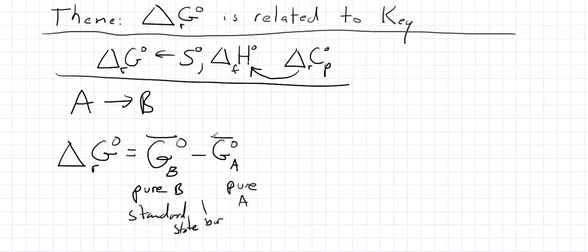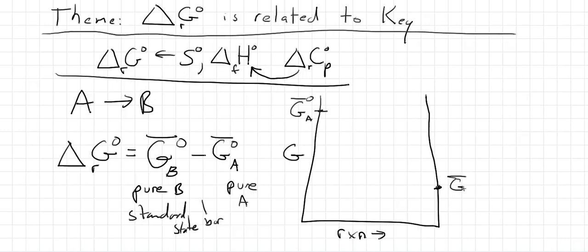Well, what this sort of says is if we have a graph and we have the reaction progress on the x-axis and we have Gibbs function on this axis, that we start off with pure A, we go to pure B, and we can imagine the reaction progressing like this. And there's one problem with that.